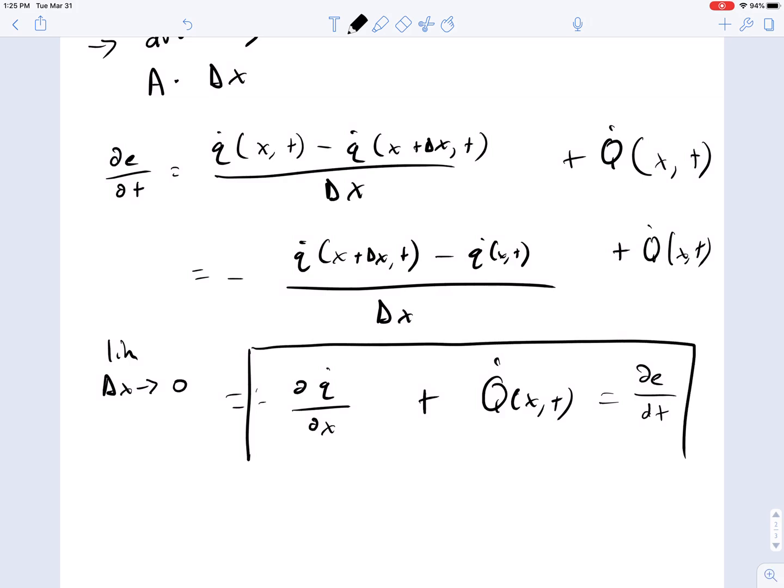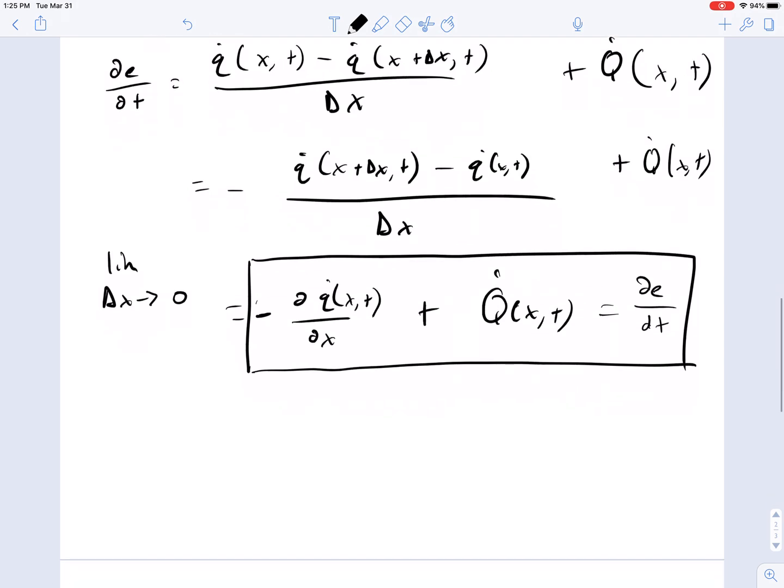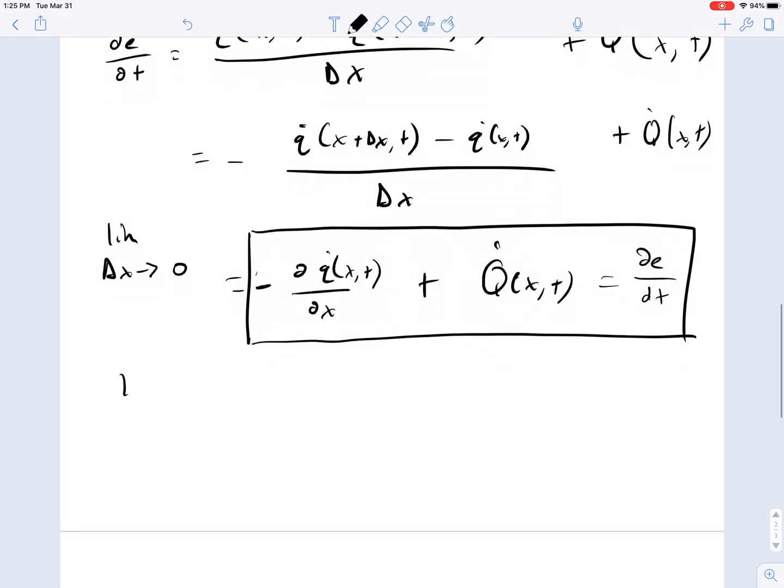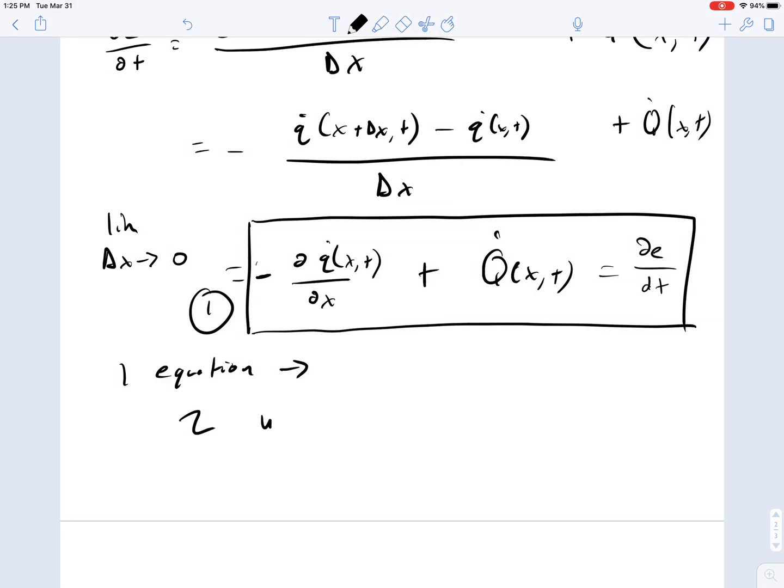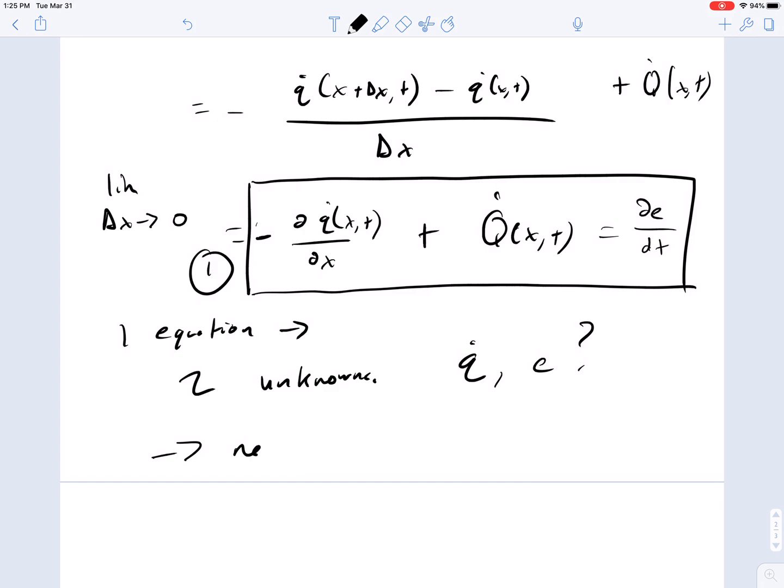This equals minus delta q del x plus q dot x comma t equals this whole energy term. This now becomes our differential form at x comma t as x gets really small of the heat flow and temperature flow due to gradients and due to the transfer of thermal energy in a liquid or solid material. The problem is we have one equation here, but we have two unknowns. We don't know q and we don't know e.